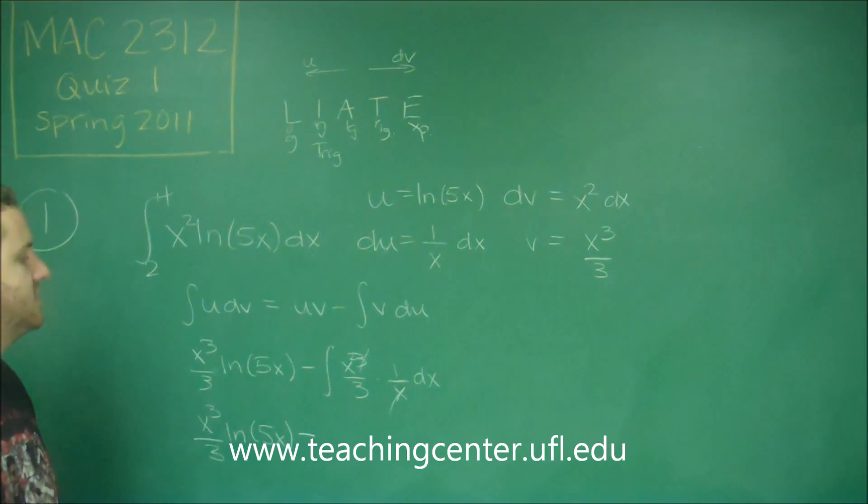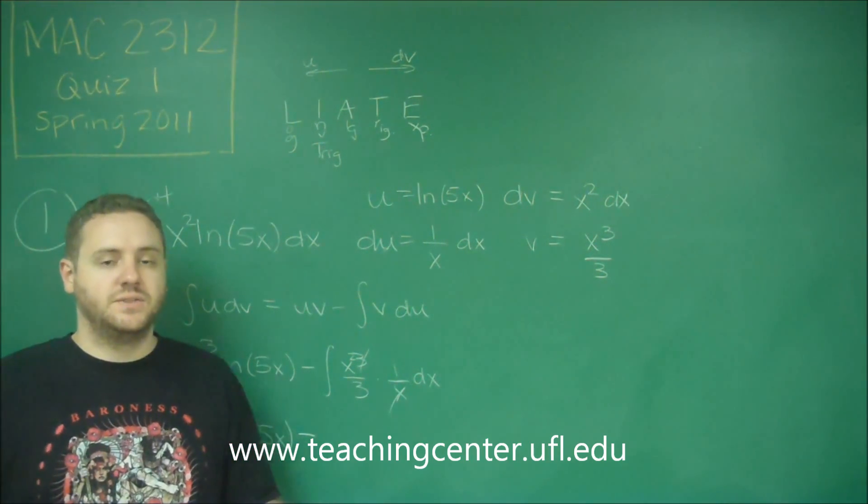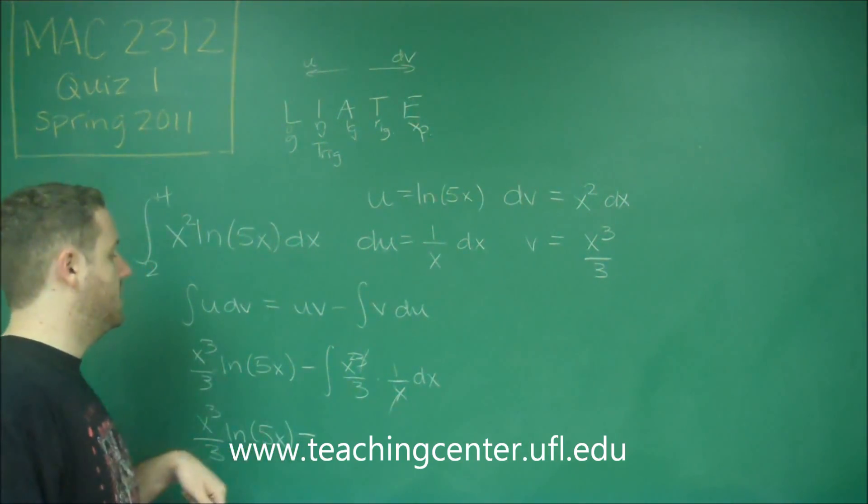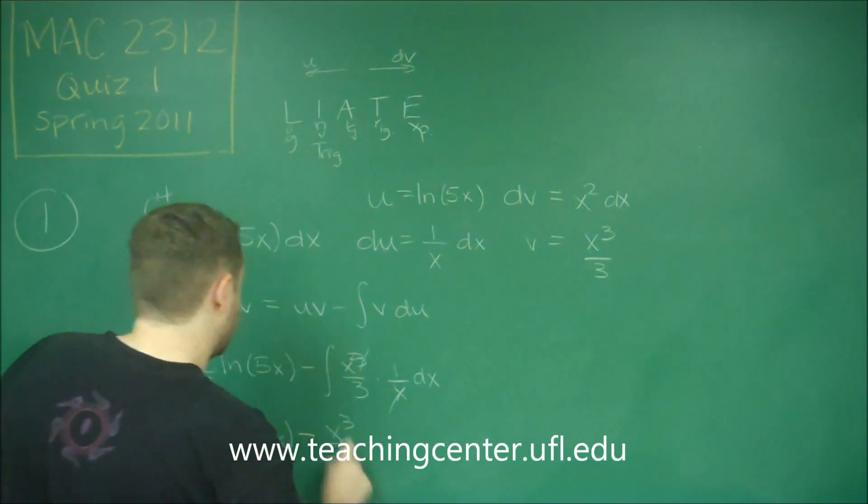The integral of x squared would be x cubed, or the antiderivative, sorry, would be x cubed over 3. And we already had a 3 there, so this is going to be x cubed over 9.